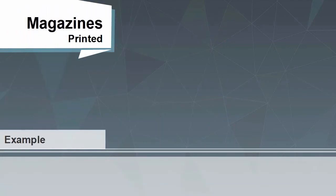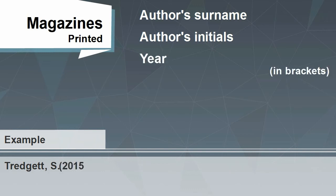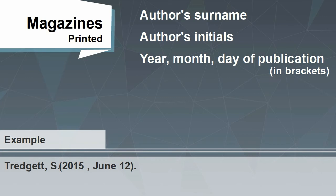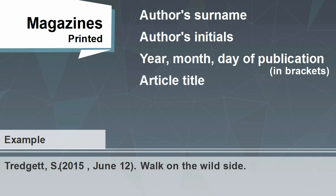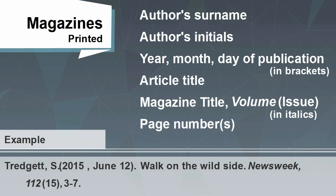How to reference a magazine article in print. The rules are the same as when citing a newspaper, with the author's surname followed by his initials. Then in brackets the year followed by the month and date of publication. Next, write the title of the article and the title of the magazine. You should then give the volume number in italics and issue number in brackets, followed by the page number or numbers that you used. You can find the volume number with the other publication information of the magazine.